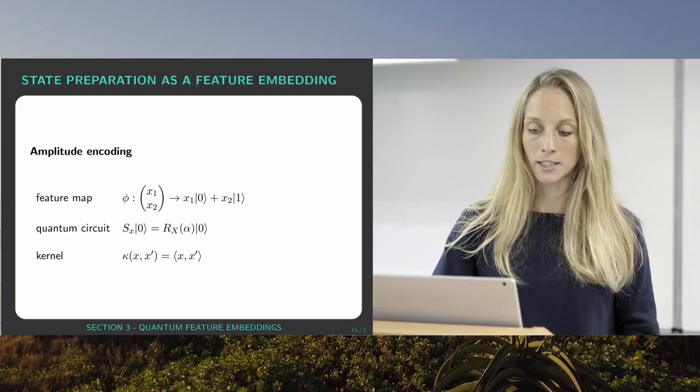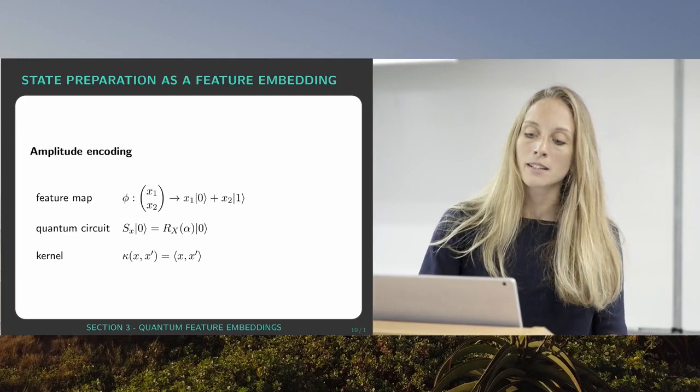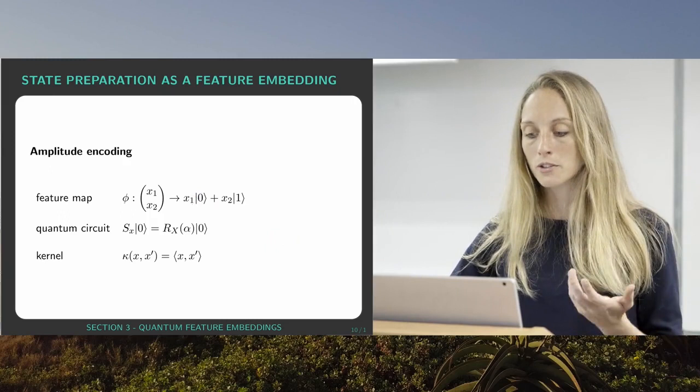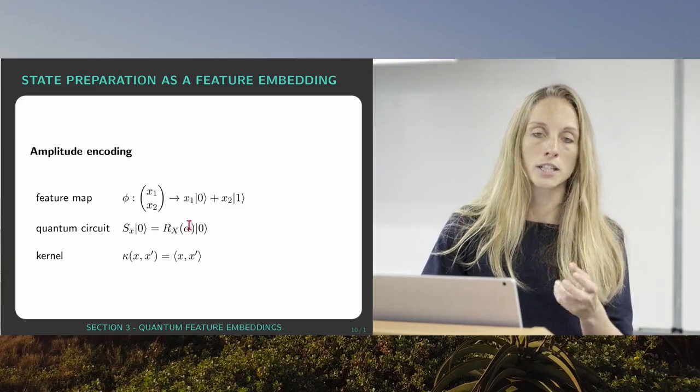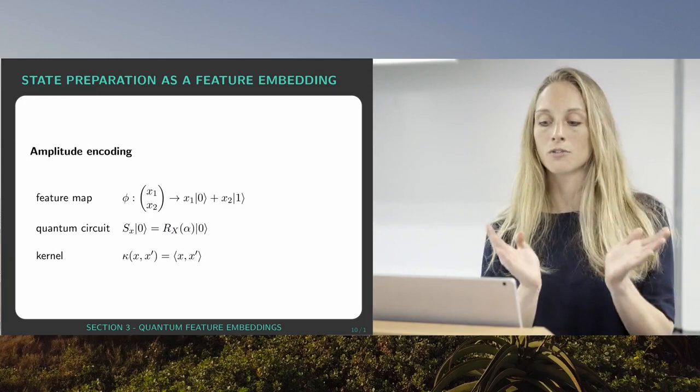In this case state preparation is also not too complicated because we just need an Rx rotation, a rotation around the x-axis by a certain angle that turns the qubit so that it exactly rotates it to the state that we saw up here.